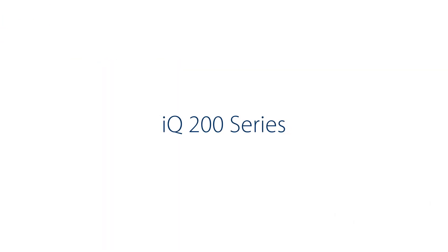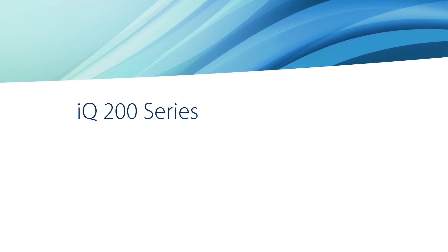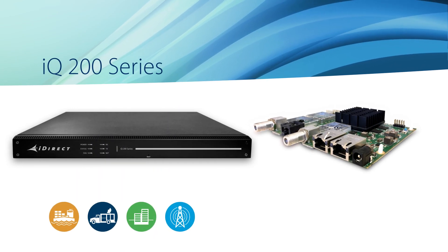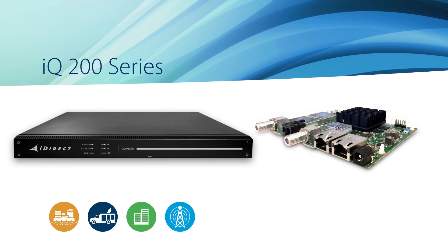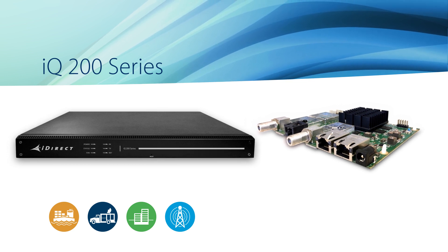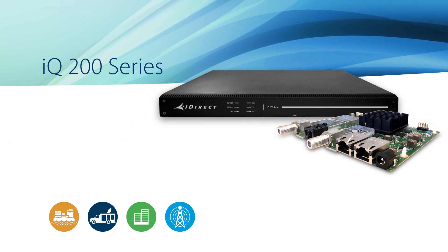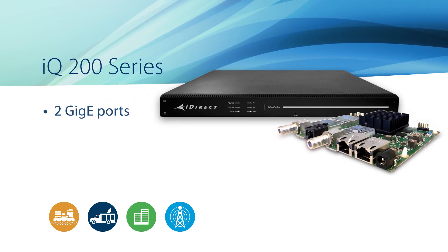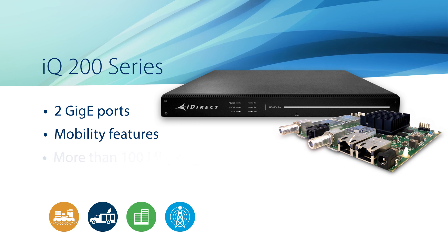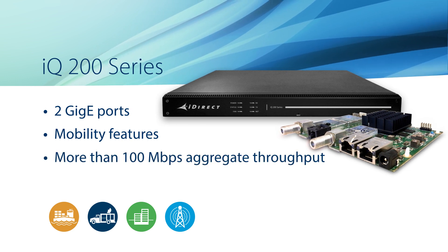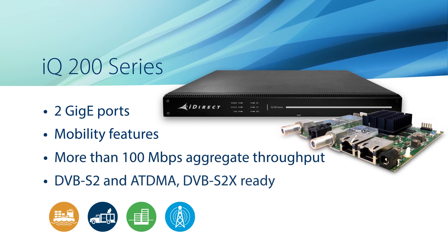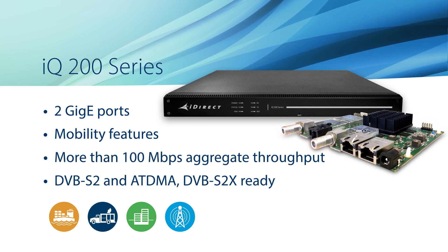The high-performance iQ 200 is designed for mobility, enterprise, and cellular backhaul applications and comes in a rack mount or board-level form factor. It features 2 GigE ports, mobility, and over 100 Mbps aggregate throughput. The iQ 200 features DVB-S2 and adaptive TDMA.